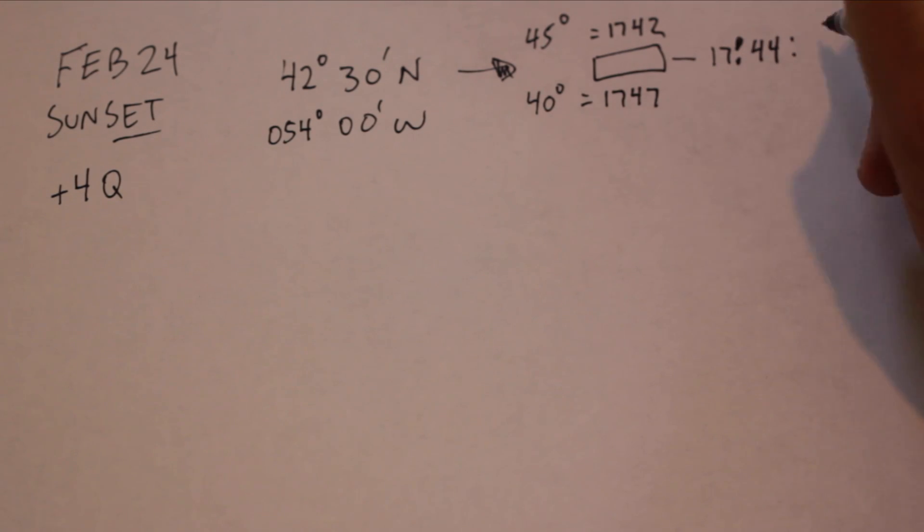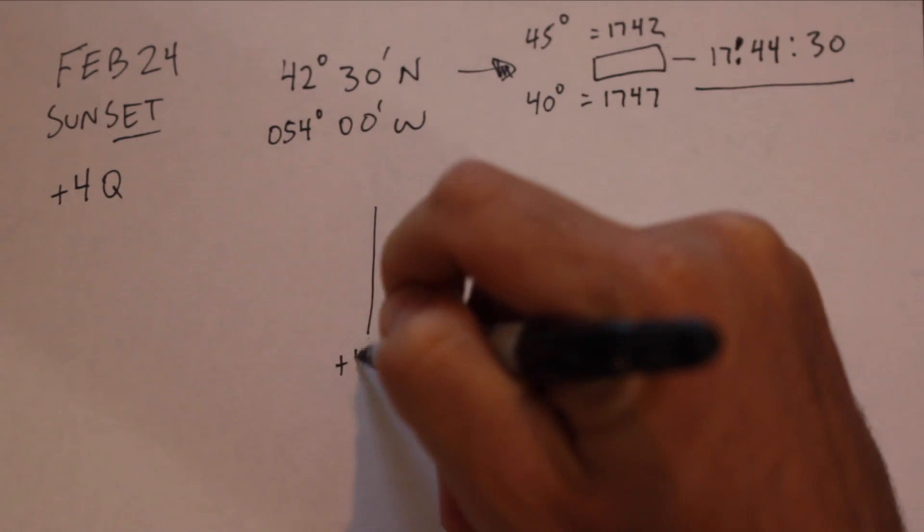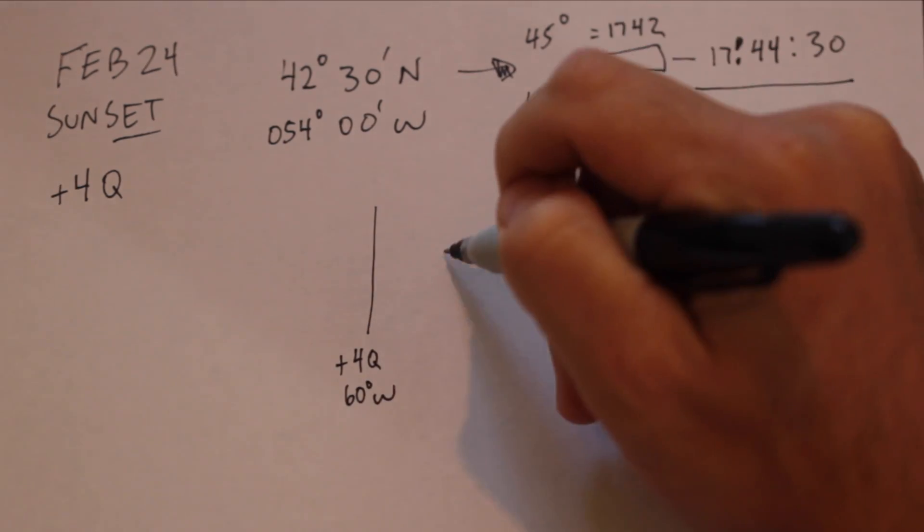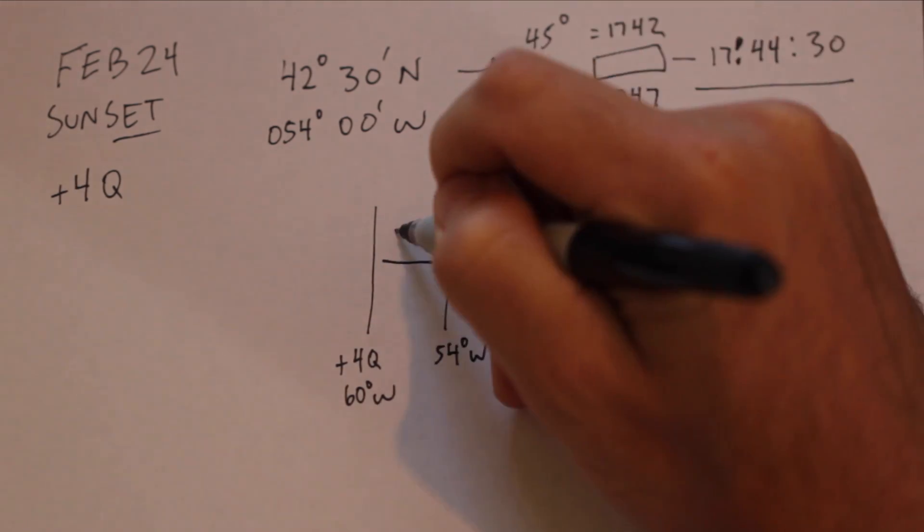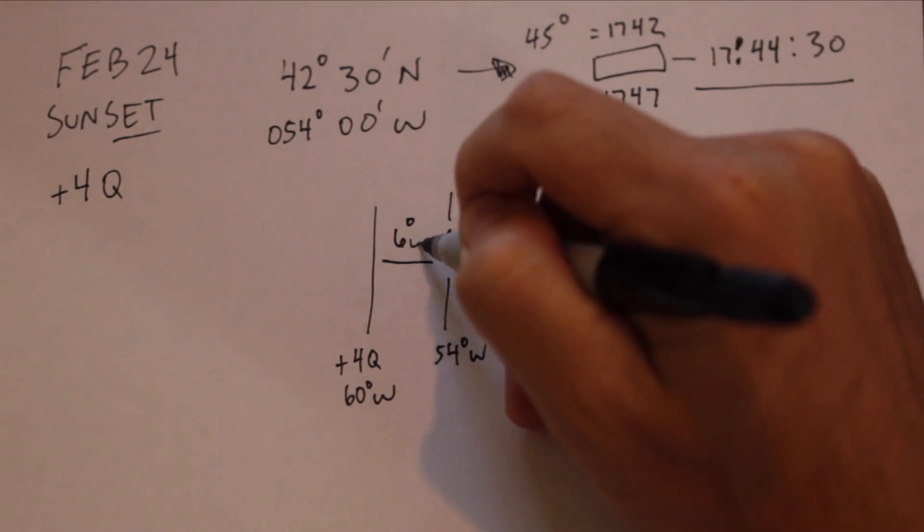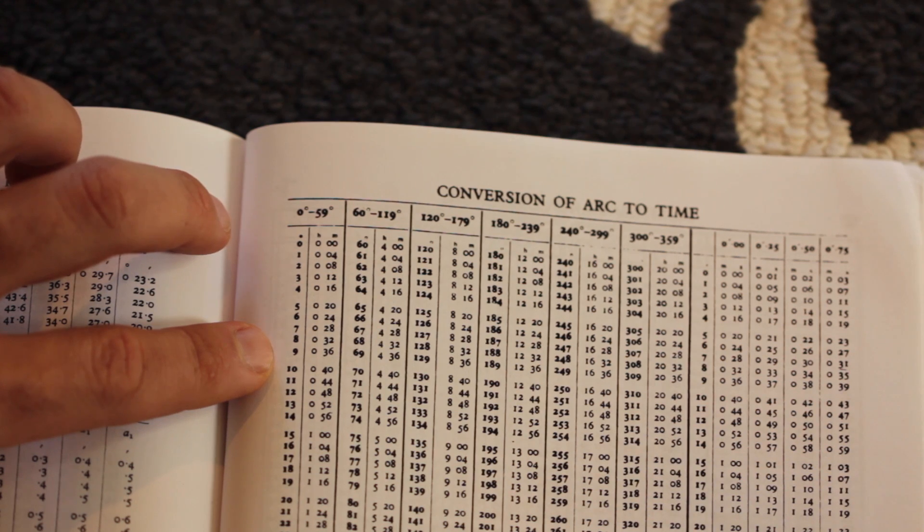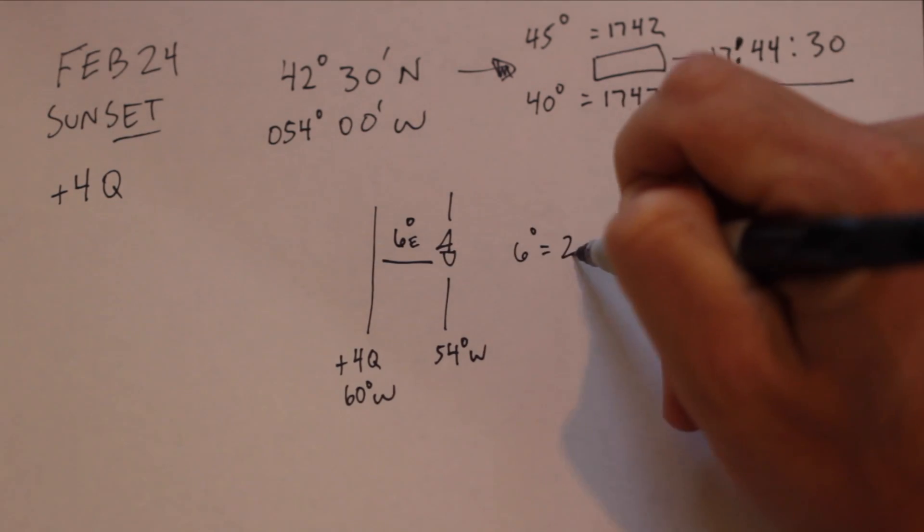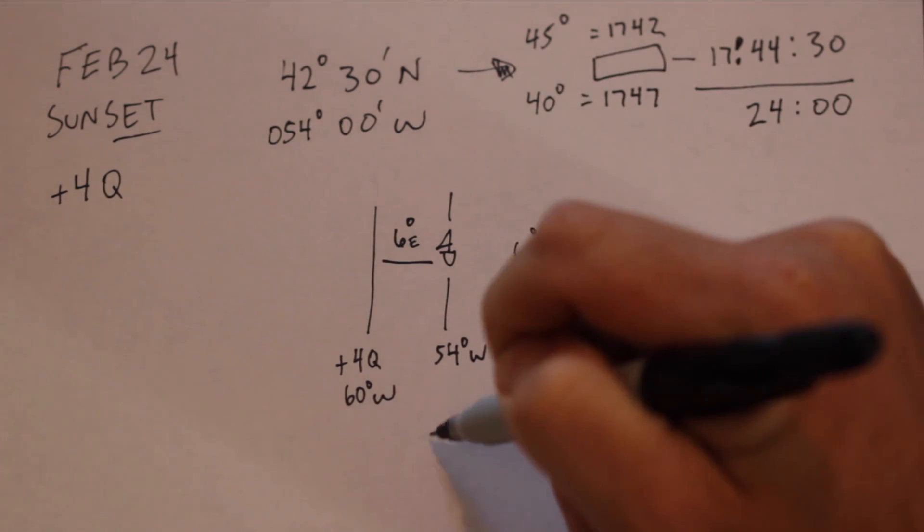Next we need to correct for longitude. We are still observing plus 4 Quebec, which corresponds to 60 degrees west, but this time we are 6 degrees to the east of the standard meridian. 6 degrees of arc is equal to 24 minutes of time, but this time we need to subtract that amount. Since we are to the east of the meridian, things will happen earlier for us.